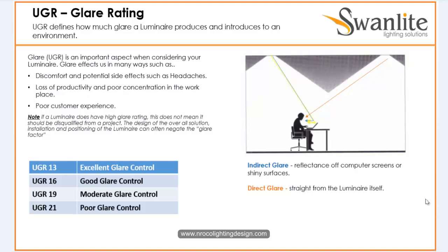So what does glare mean to our lives? For example, you are working in an office and one of the luminaires keeps hitting your eye — that means that luminaire is very glary in your position. There are two types of glare: indirect and direct. You need to consider both in sports lighting as well as in office lighting.